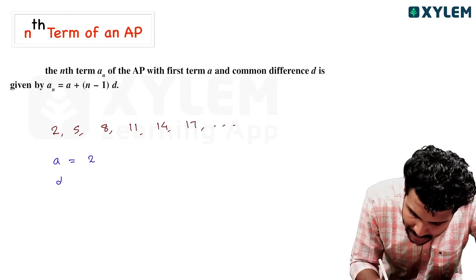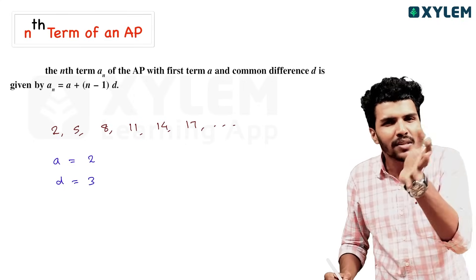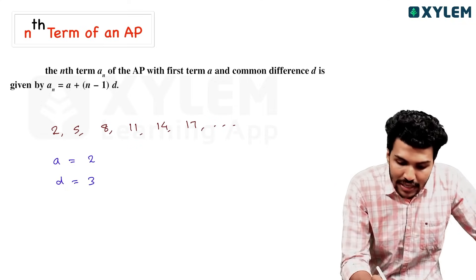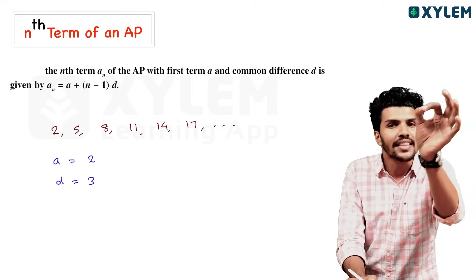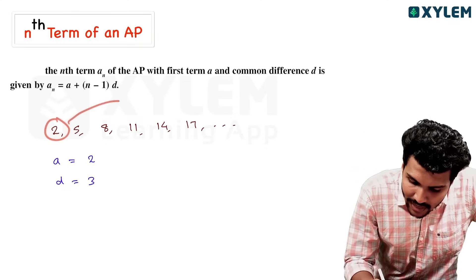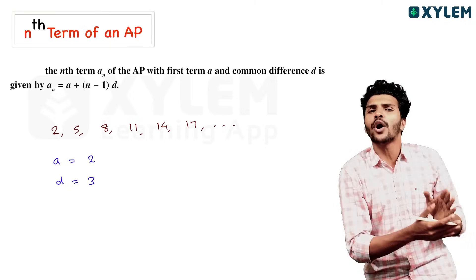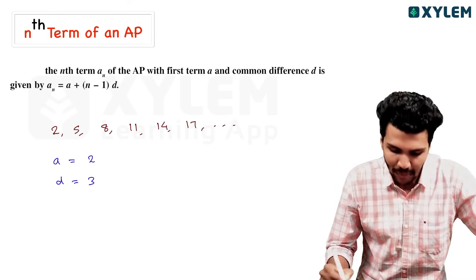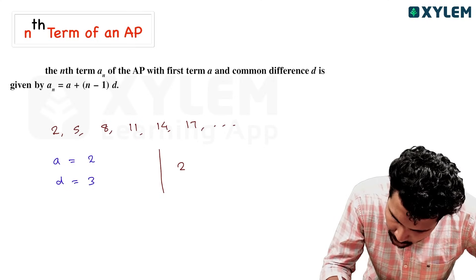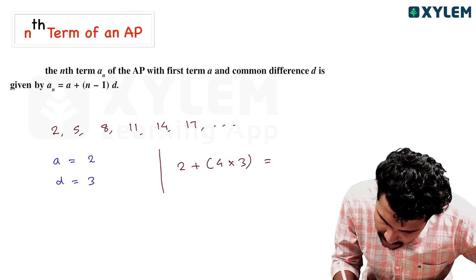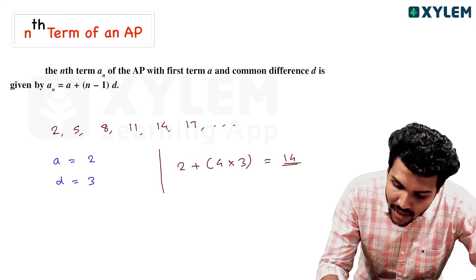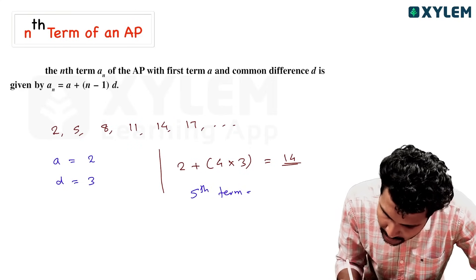The common difference is 3. To find any term, you add the common difference repeatedly. For example, the fifth term: start at 2, add 3 four times. 2 + 4×3 = 2 + 12 = 14. So the fifth term is a + 4d.